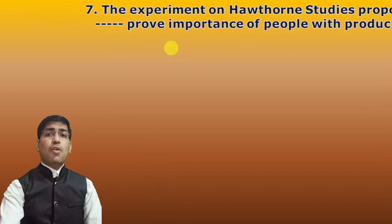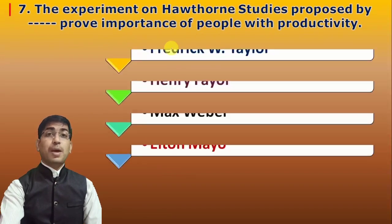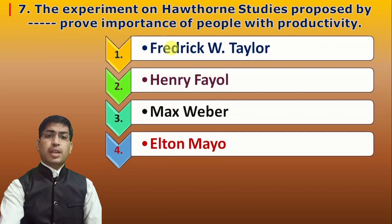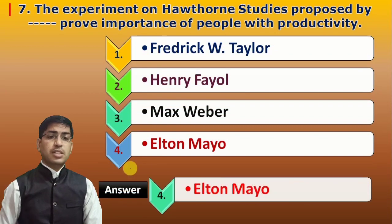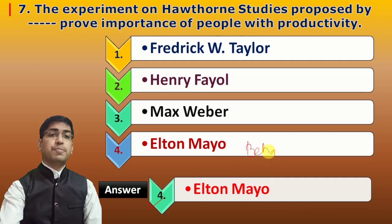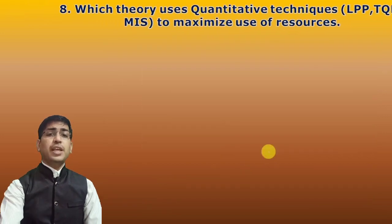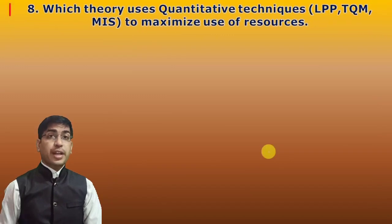Next question: The Hawthorne studies experiment was proposed by which scientist, proving the importance of people with productivity? The answer is Elton Mayo, under the theory of behaviour. Remember where Elton Mayo's work fits — it is under the behavioural theory.